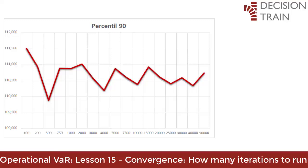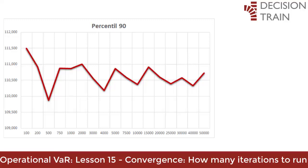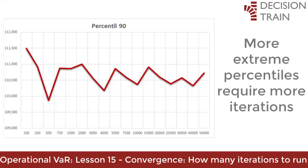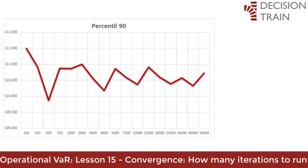If, instead, you are interested in a more extreme percentile such as the 95th, your iterations required to achieve convergence or stability in the results could be even higher. Since fewer samples are collected after the 95th percentile — by definition, only 5 percent of the iterations — more iterations are needed to collect enough samples to achieve convergence at the 95th percentile.